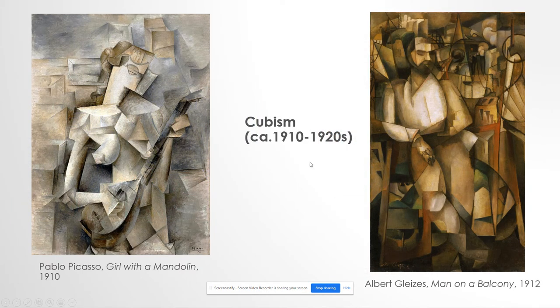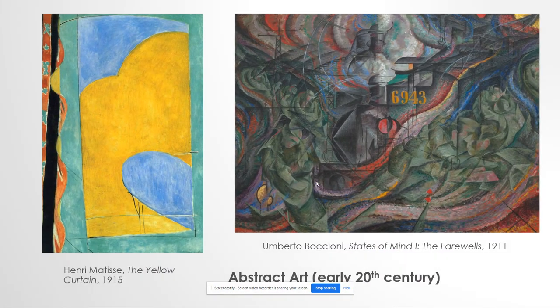Third, Cubism — Picasso is the most famous example, right at the tail end of our time period, 1910 into the 1920s, and we're getting into the era of modern art. Last, abstract art — same era, early 20th century. We're seeing abstract representations of life and the human experience. Matisse is probably the best example from this time period — Henri Matisse, early 20th century.